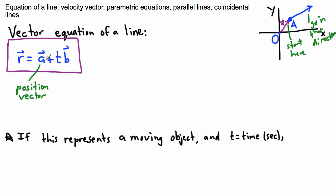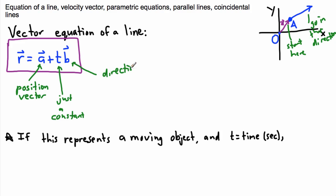Then I have to actually go in some direction. This t here is just some sort of constant — it's just any old scalar, any number. Remember that it doesn't have a vector symbol on top of it. Whereas this one over here, vector b, is called your direction vector. That tells you in what direction to travel — where you point. The position vector is where you start, and then you point somewhere else from there.